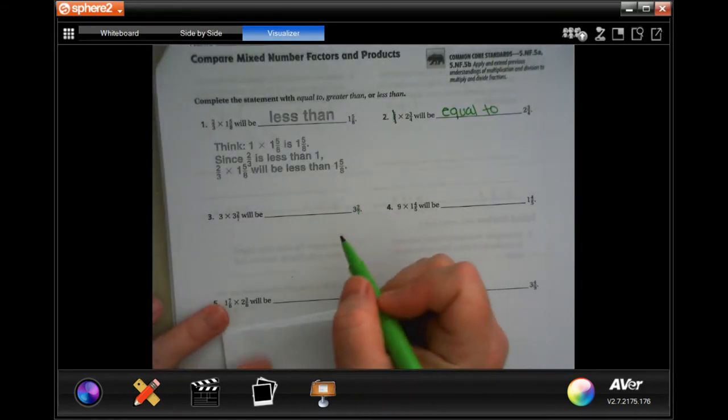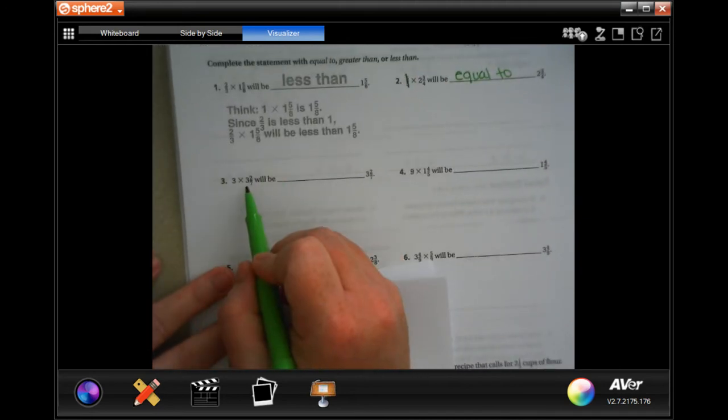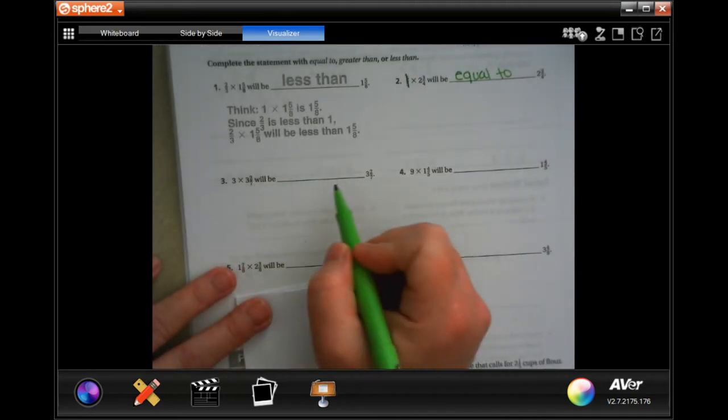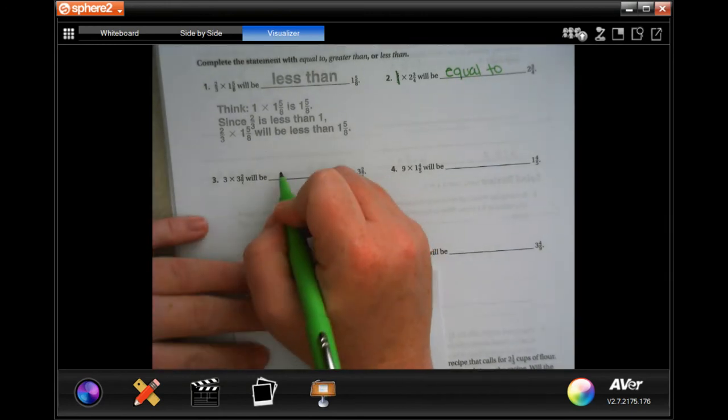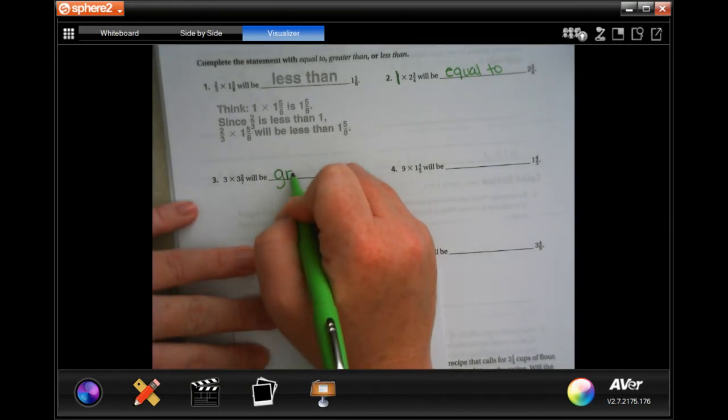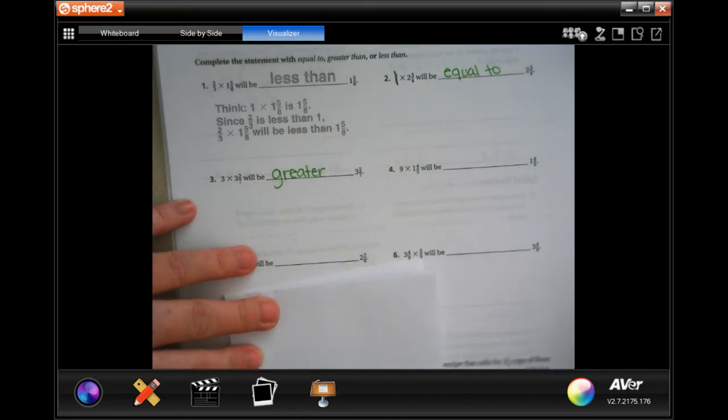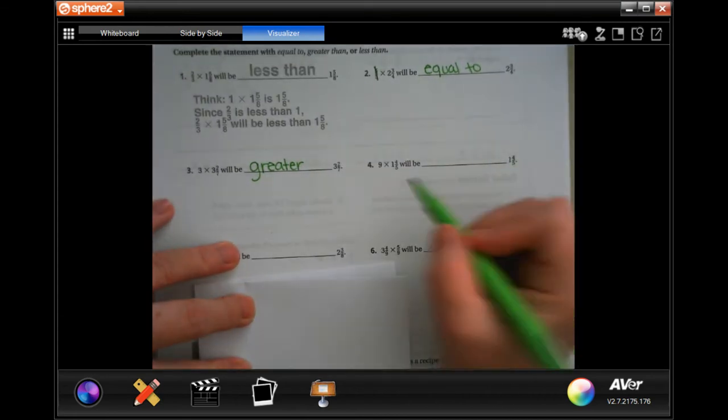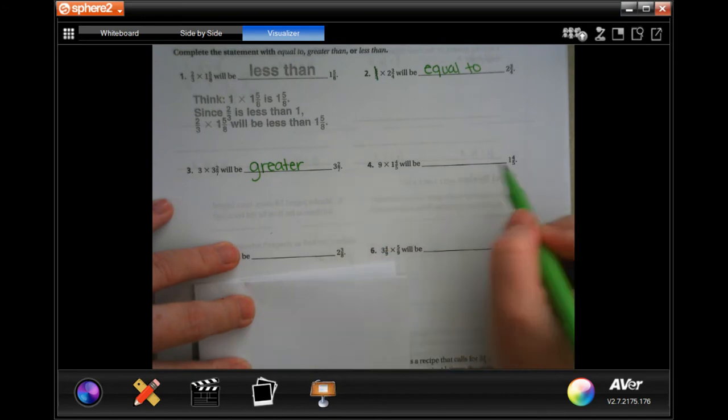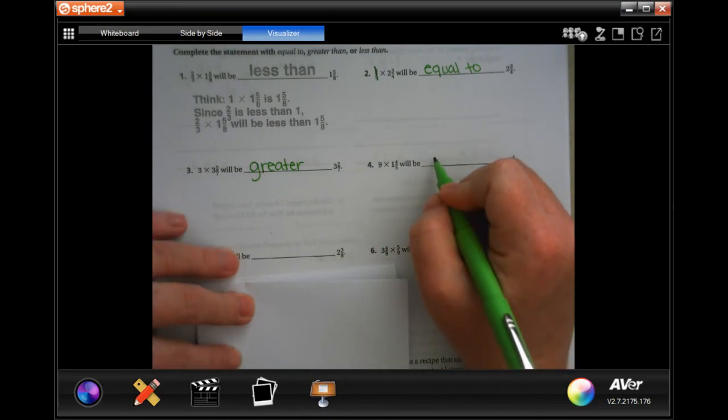When we are multiplying a whole number by a whole number with a fraction, it's always going to be greater than, every single time. Whole number, whole number with a fraction, it's going to be greater than.